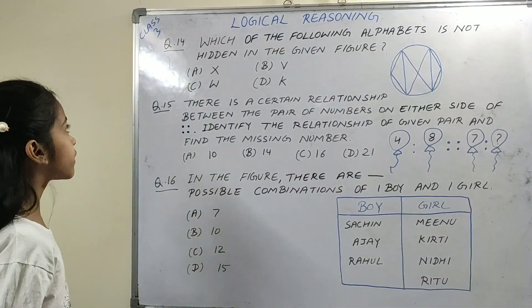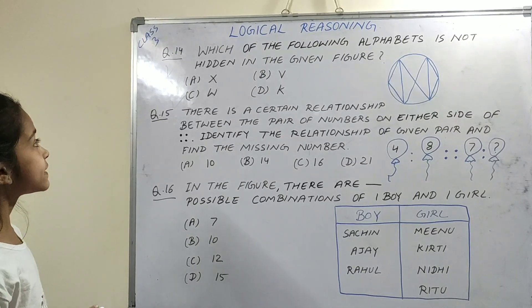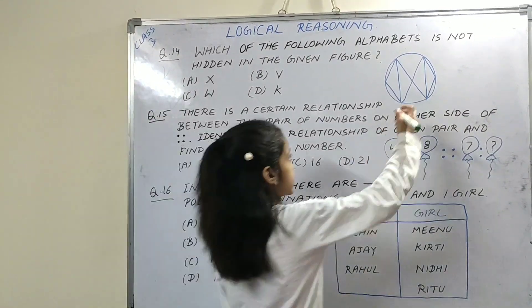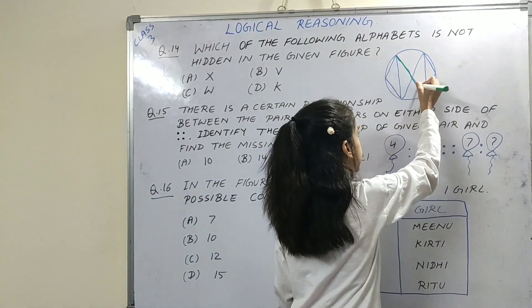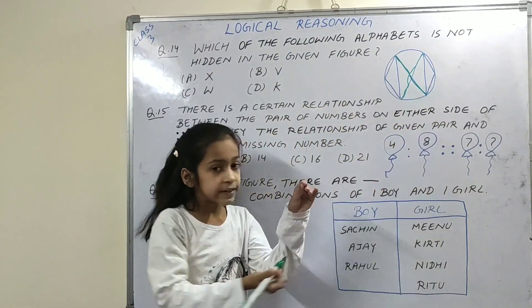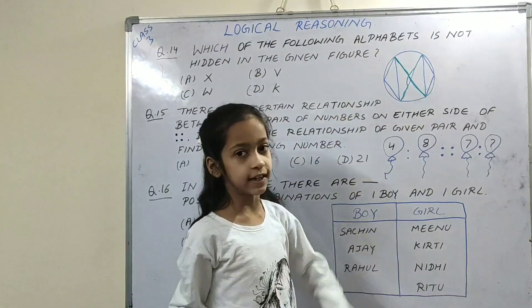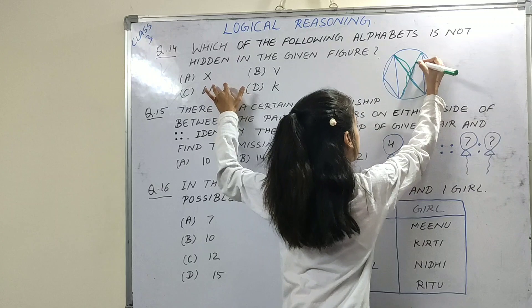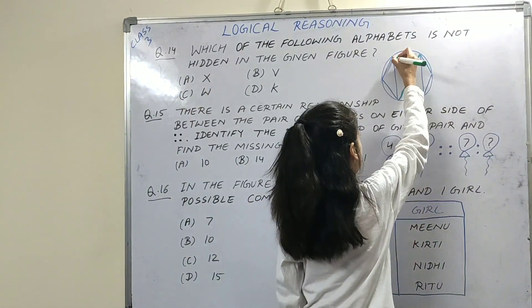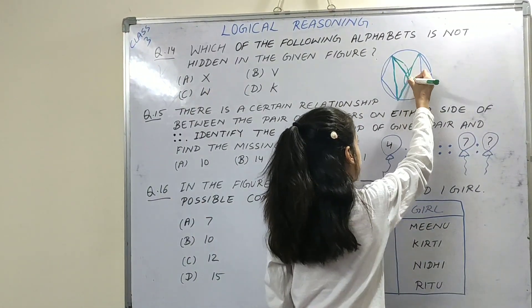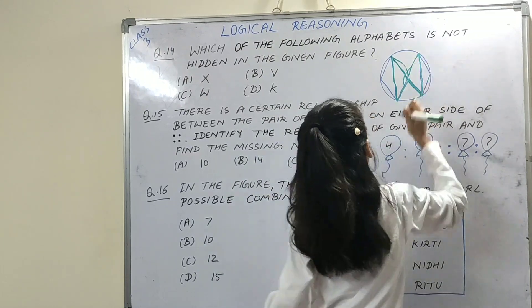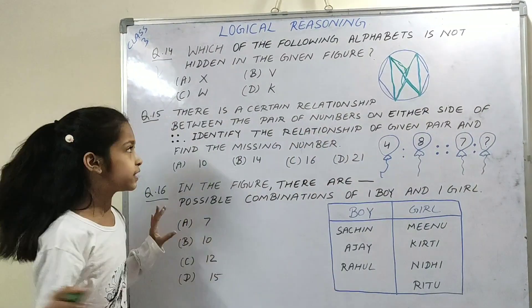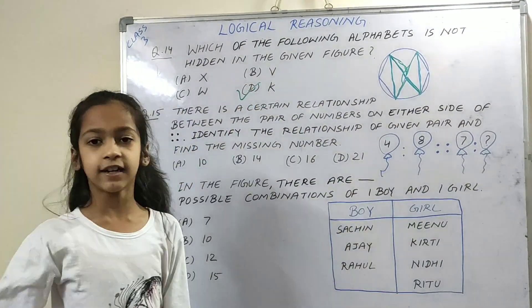Next question, question number 14. Which alphabet is not hidden in the given figure? This one will be W, this one will be X, this one will be Y. Now we will check K. K is not here. So option D is the right option.